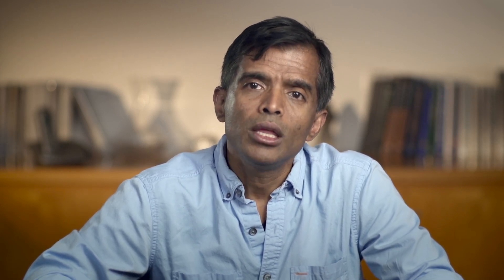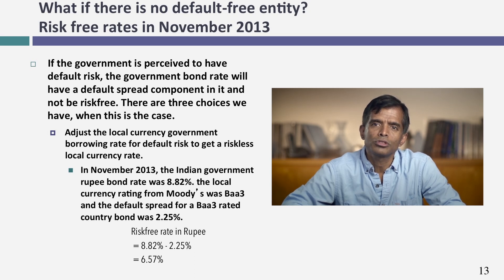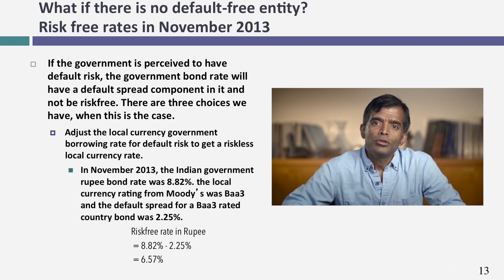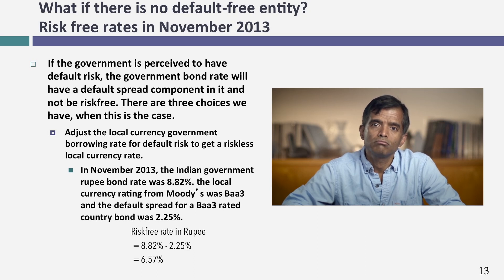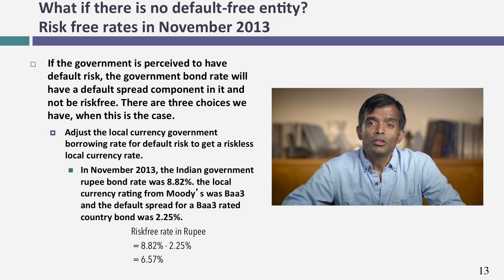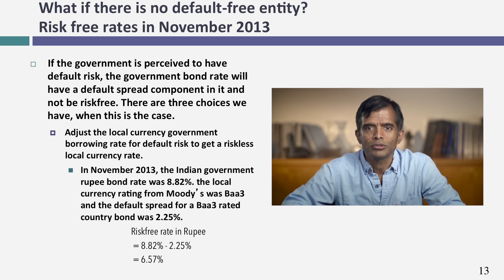There are three choices. The first is to stay with the local currency, get a government bond in that currency, and then net out the portion due to default risk. For example, in November of 2013, the Indian rupee government bond rate was 8.82% — a 10-year Indian government bond denominated in rupees. However, the Indian government was not rated default-free. I checked Moody's sovereign ratings: India was rated BAA3, and the default spread for that rating was 2.25%.